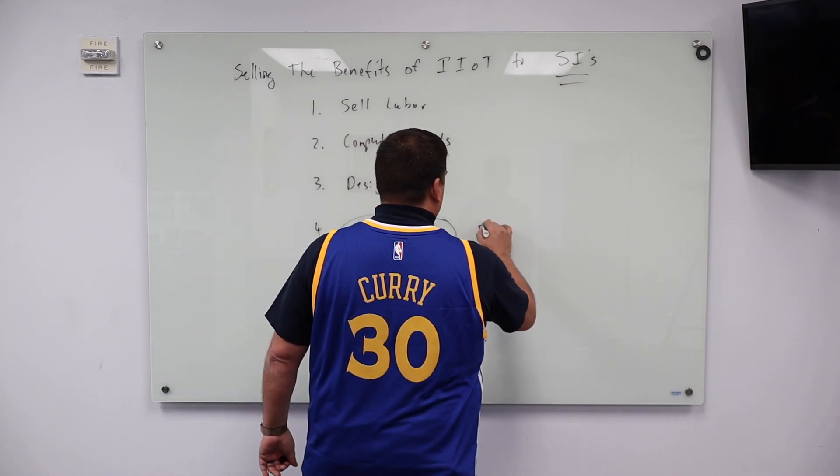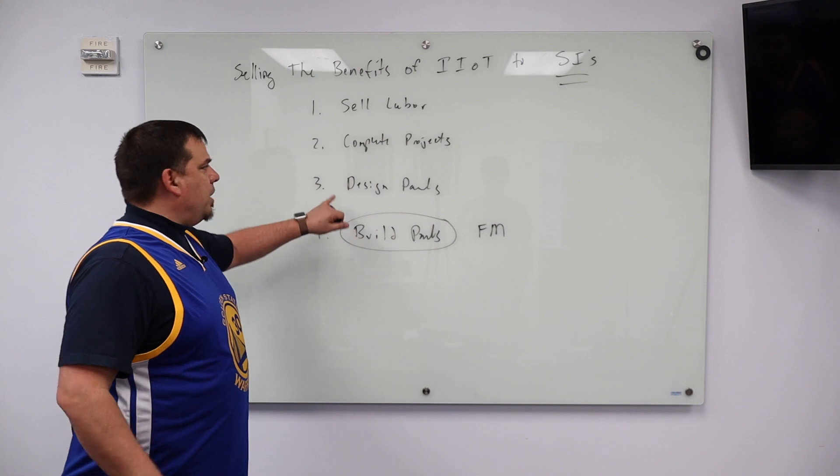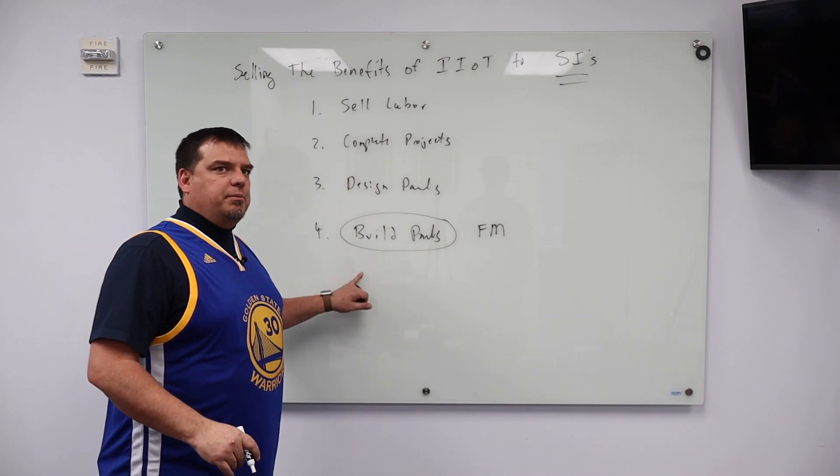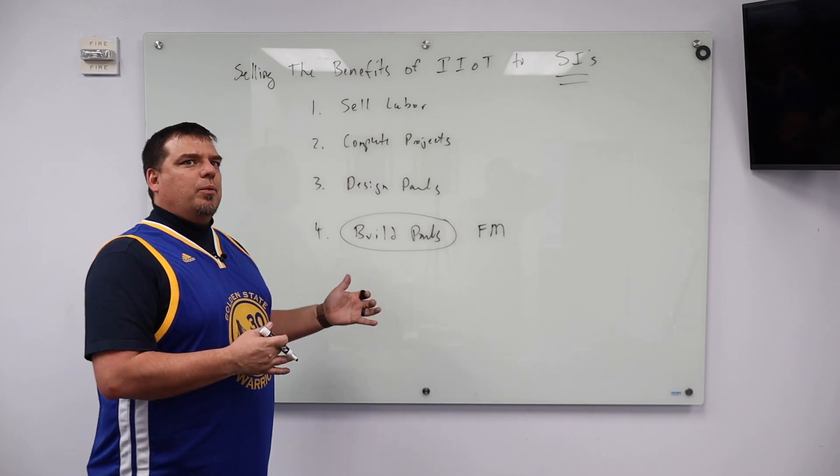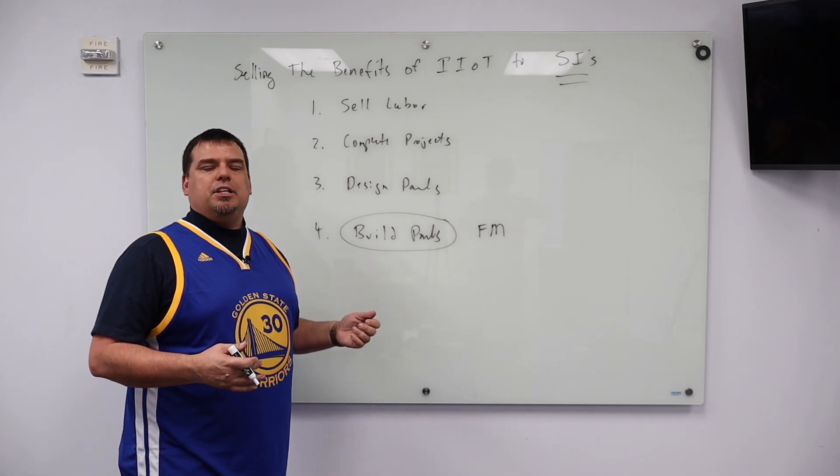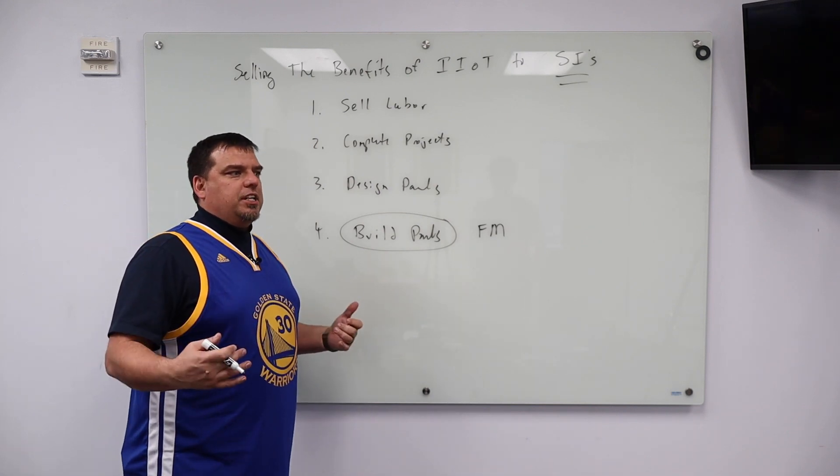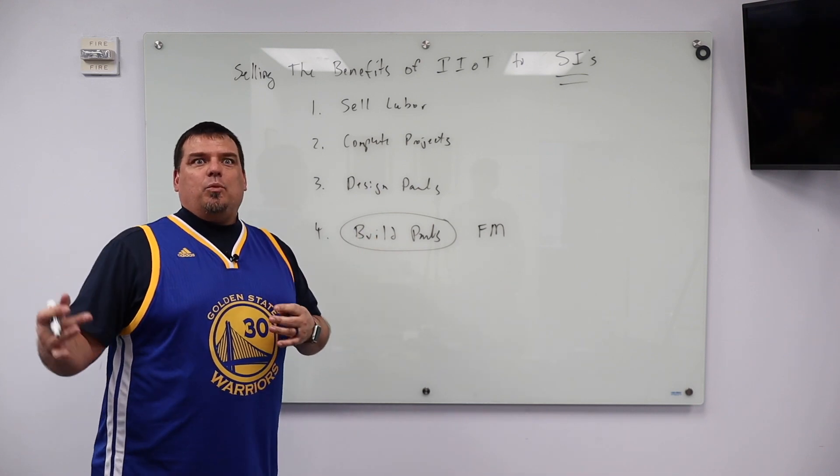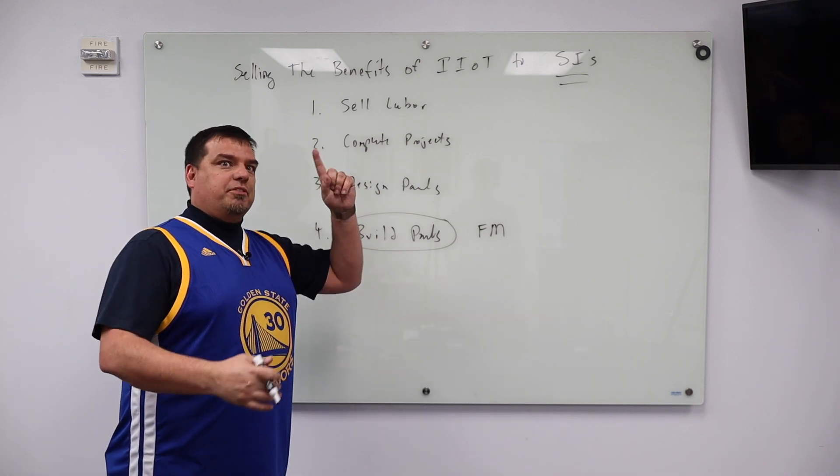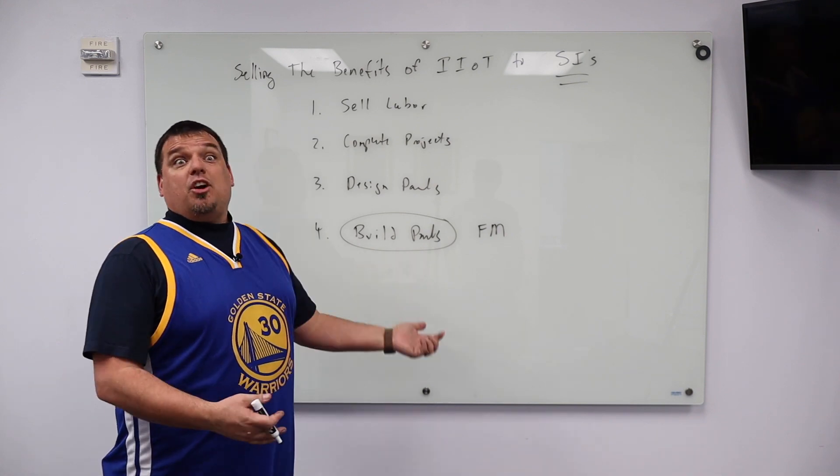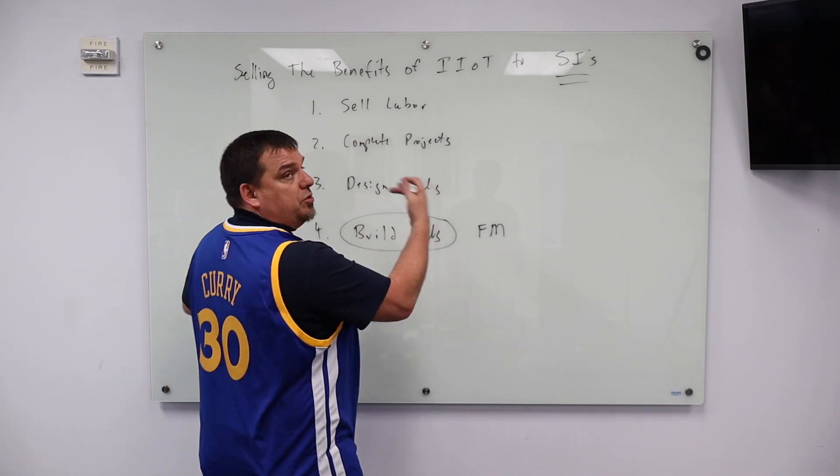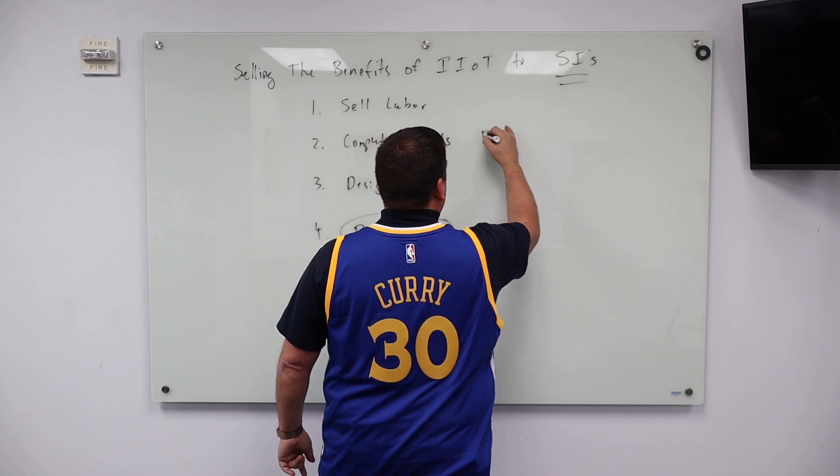So what they want to do is they want to force multiply when they're building their panels. They want to design it one time and build it a million times. It's actually the same thing with their projects. Like this is why water wastewater is so popular with systems integration because the systems integrators want to use the same water wastewater project that they developed the first time. They want to use it a hundred different times in a wastewater facility, but they want to charge the same amount for it.